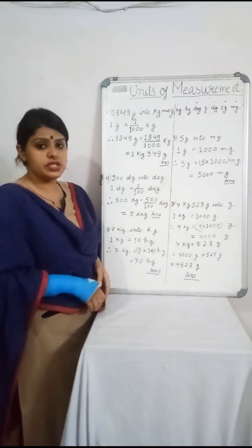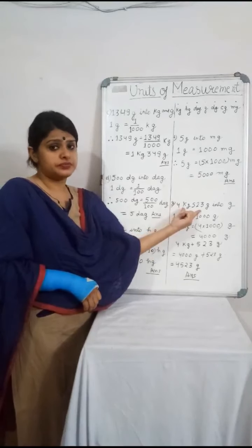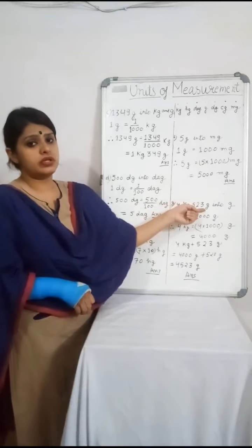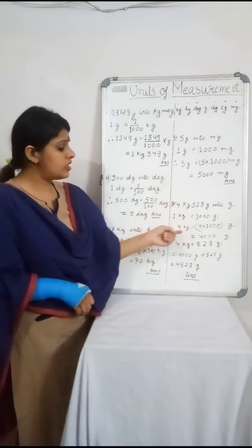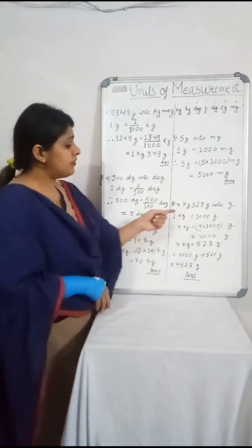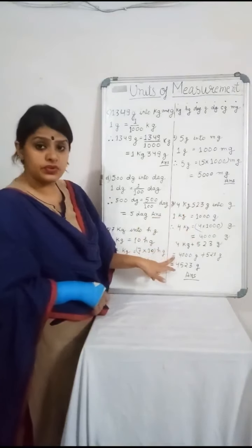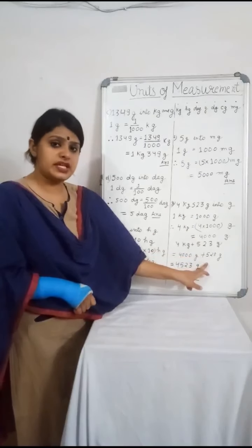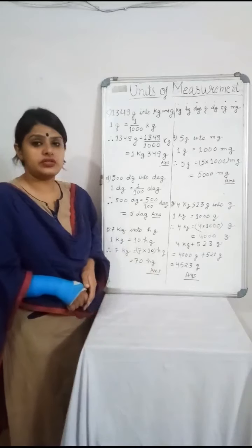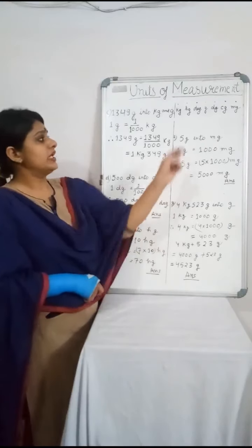G. Convert 4 kg 523 grams into grams. Here we have to convert both into grams. Kg we have to convert into grams, but the 523 grams is already in grams. So 1 kg is equal to 1000 grams, so 4 kg equals 4000 grams. We add the two: 4 kg written as 4000 grams, plus 523 grams already in grams, gives us 4523 grams. I hope you have understood various conversions using this table.